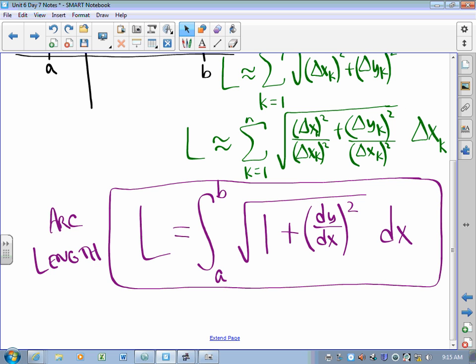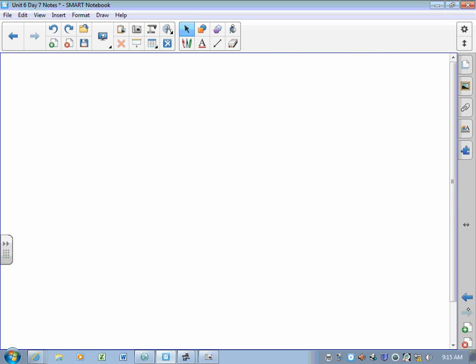The sigma turns into an integral symbol from a to b. The square root is still a square root. Delta x squared over delta x squared is 1. Delta y over delta x becomes dy dx. This is the formula for arc length: integral from a to b of square root of 1 plus derivative squared dx. That's something you've got to have, you've got to know it, you've got to be able to spit that back at me whenever I ask.